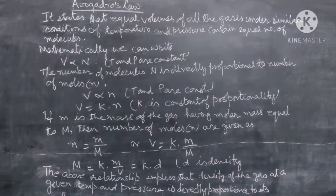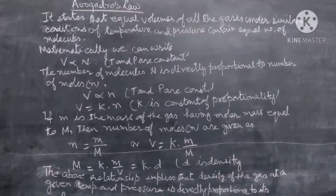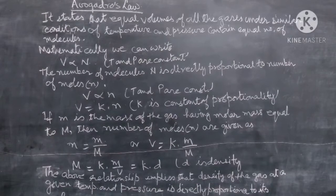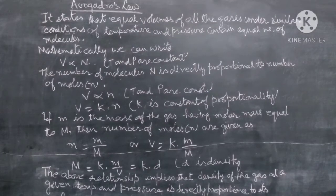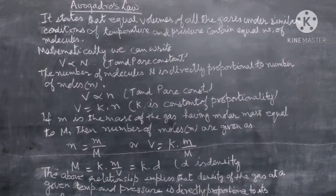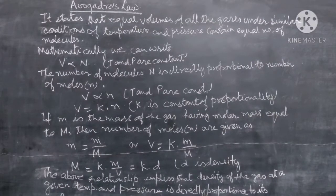At the same time, one mole of all gases at 273.15 Kelvin, that is 0 degree Celsius, and one bar pressure occupies a volume of 22.7 litres. This means that as long as the temperature and pressure remain constant, the volume of the gas is directly proportional to the number of molecules, or in other words, the amount of the gas.